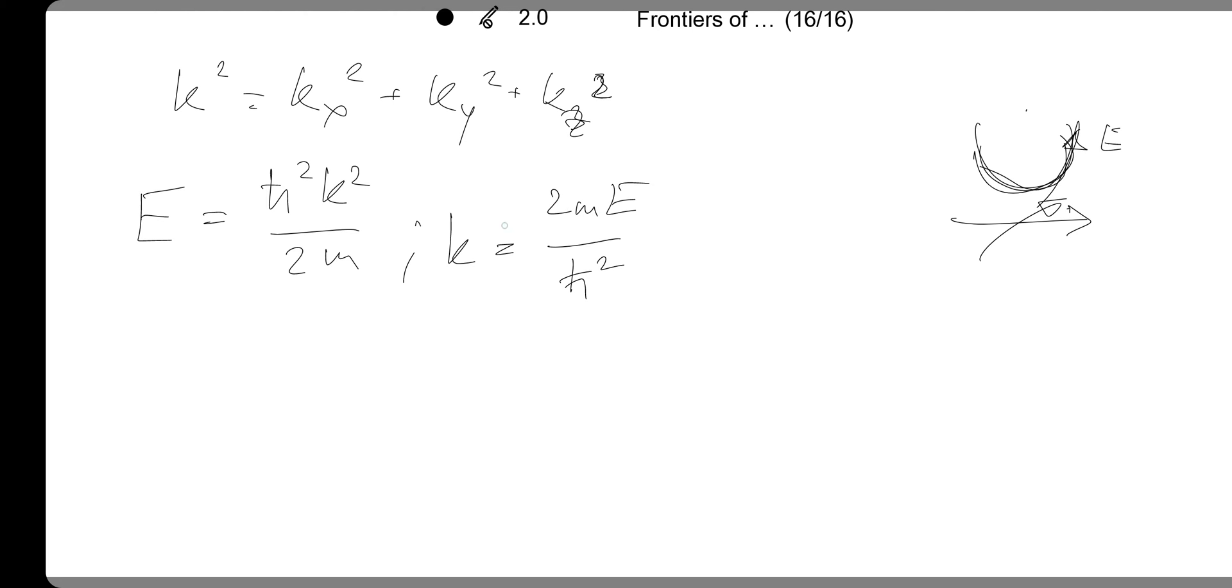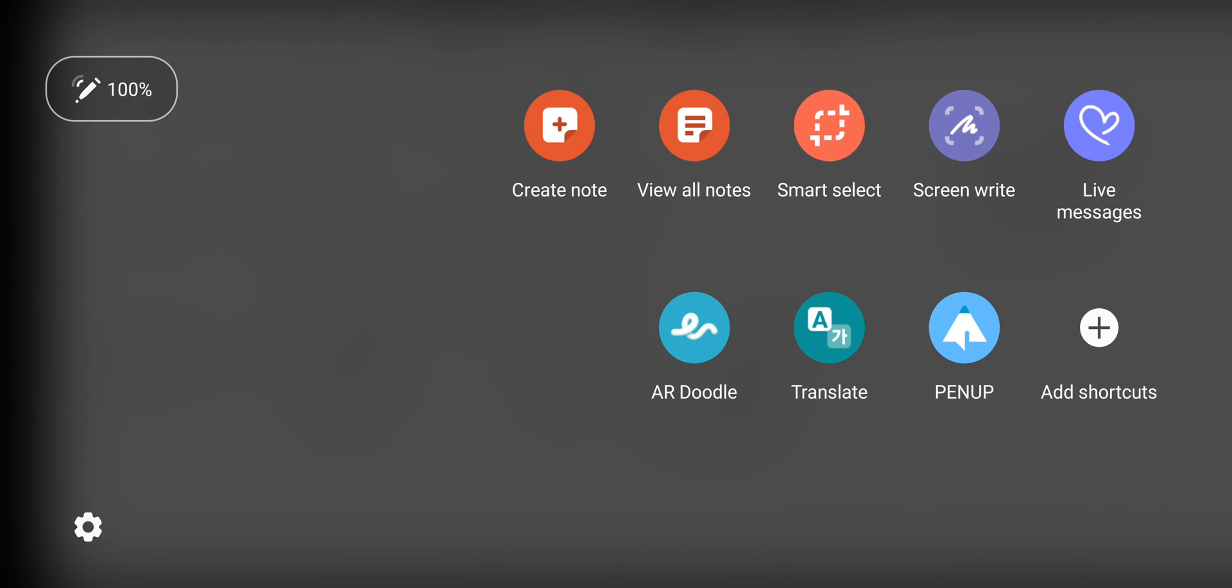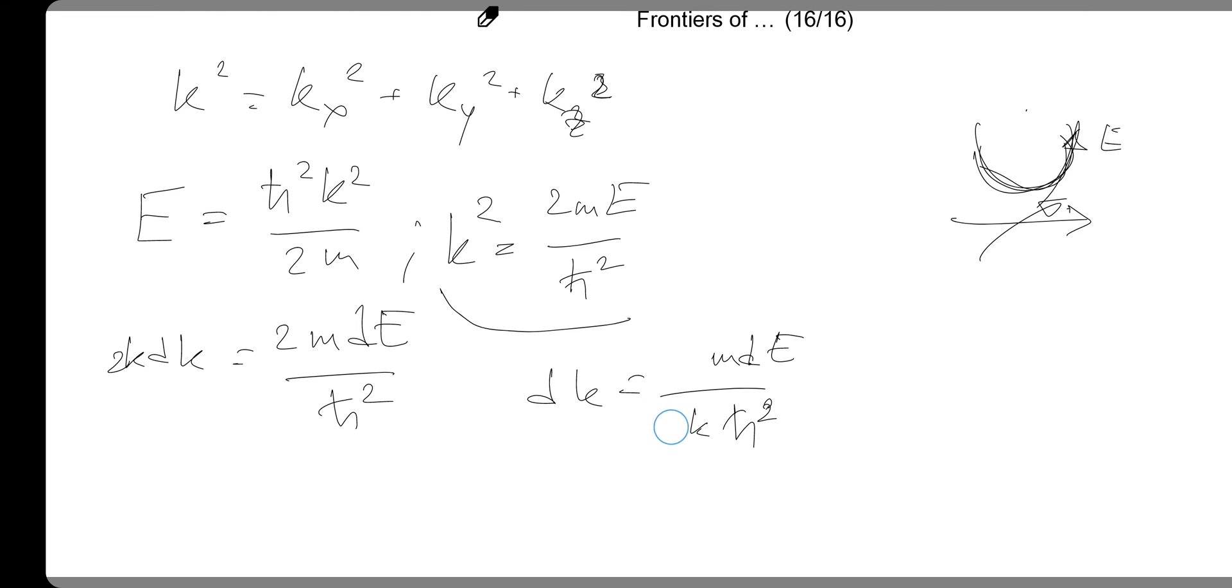So now we can do some evaluation there. Let's take the derivative of this one. We will have 2k dk equals 2m dE over h-bar squared. So then dk is 2m dE over 2k h-bar squared. So the twos cancel.